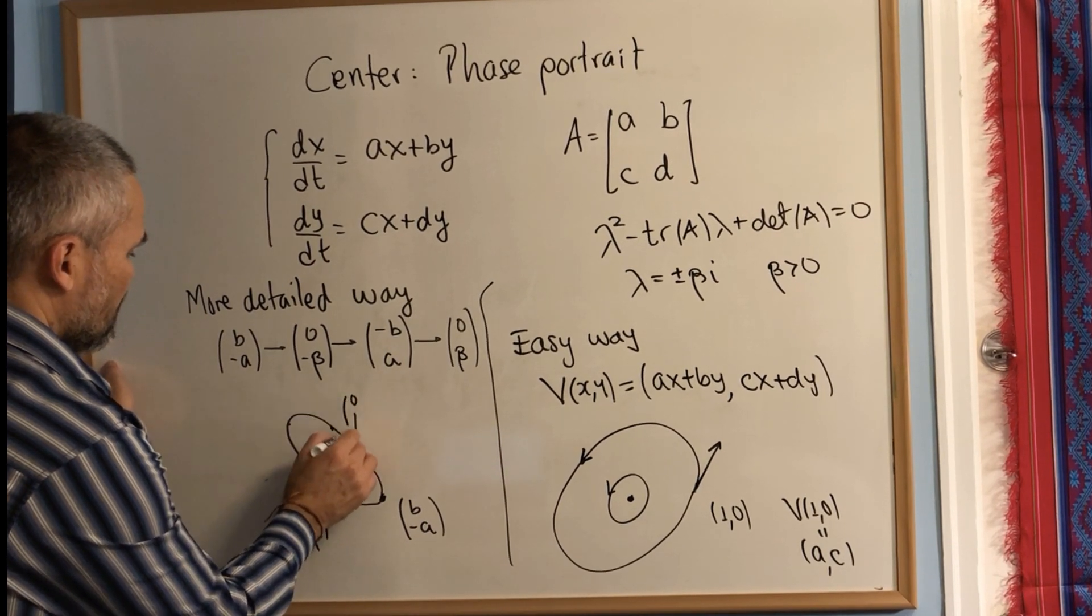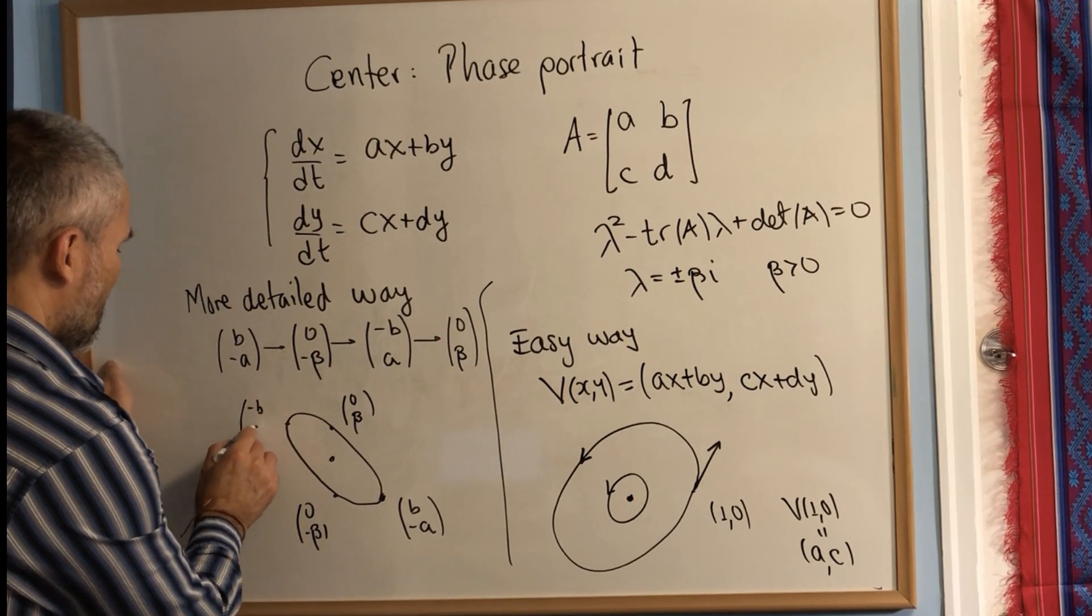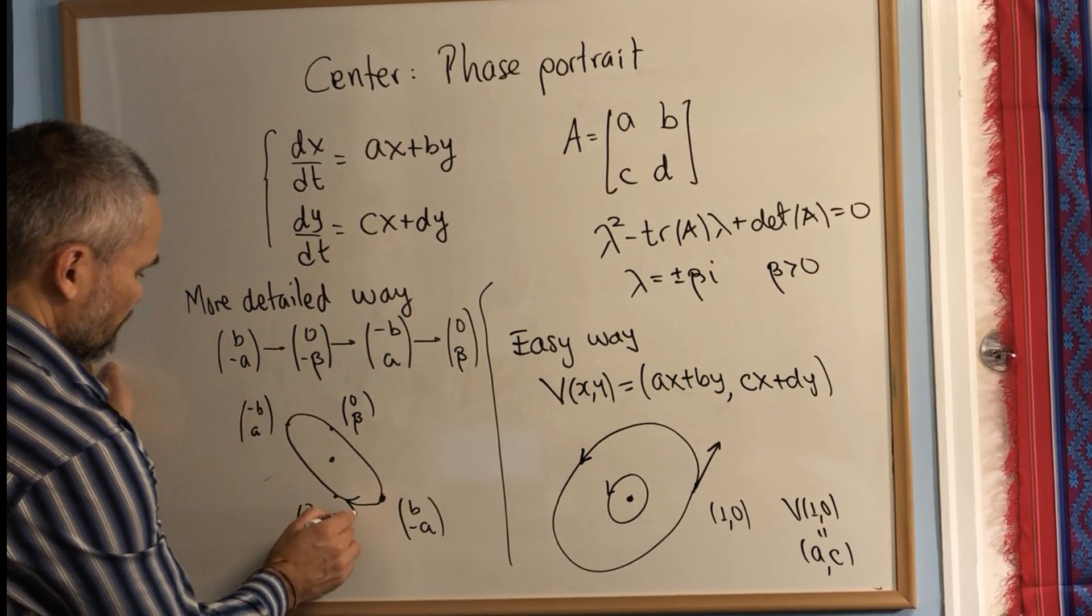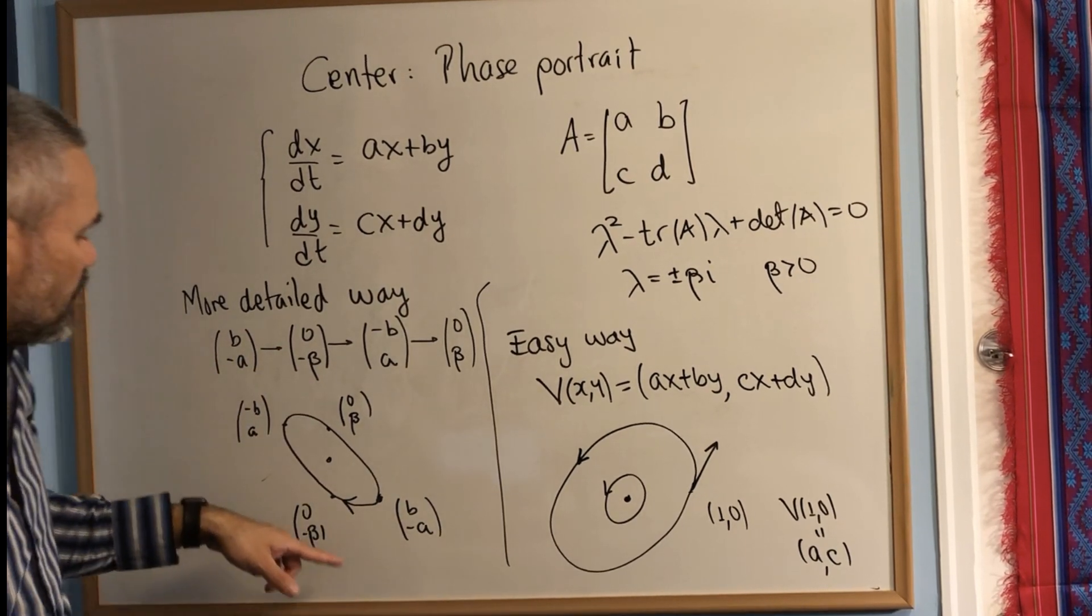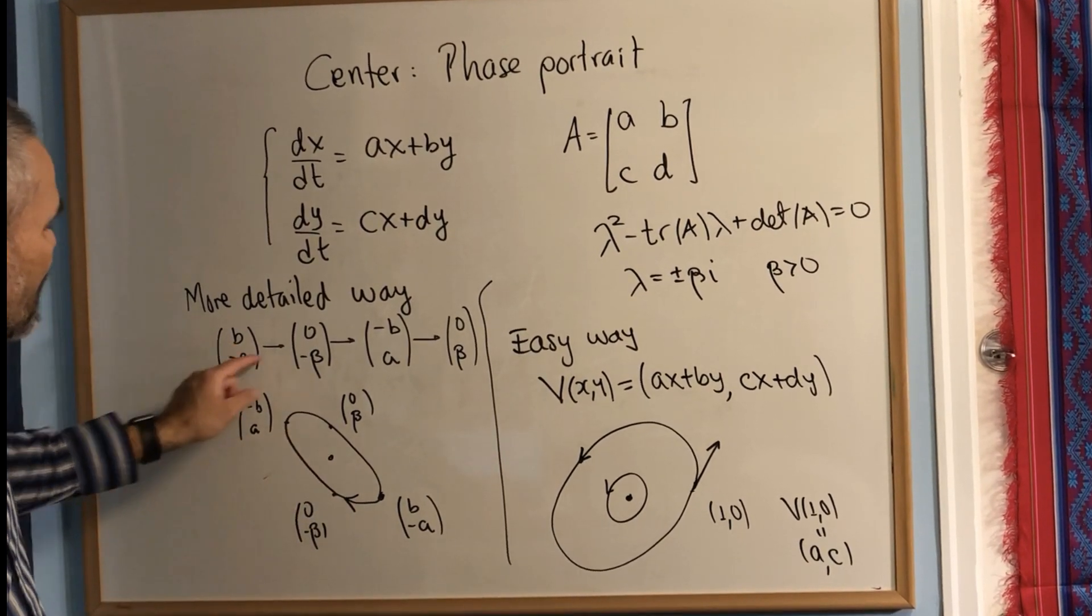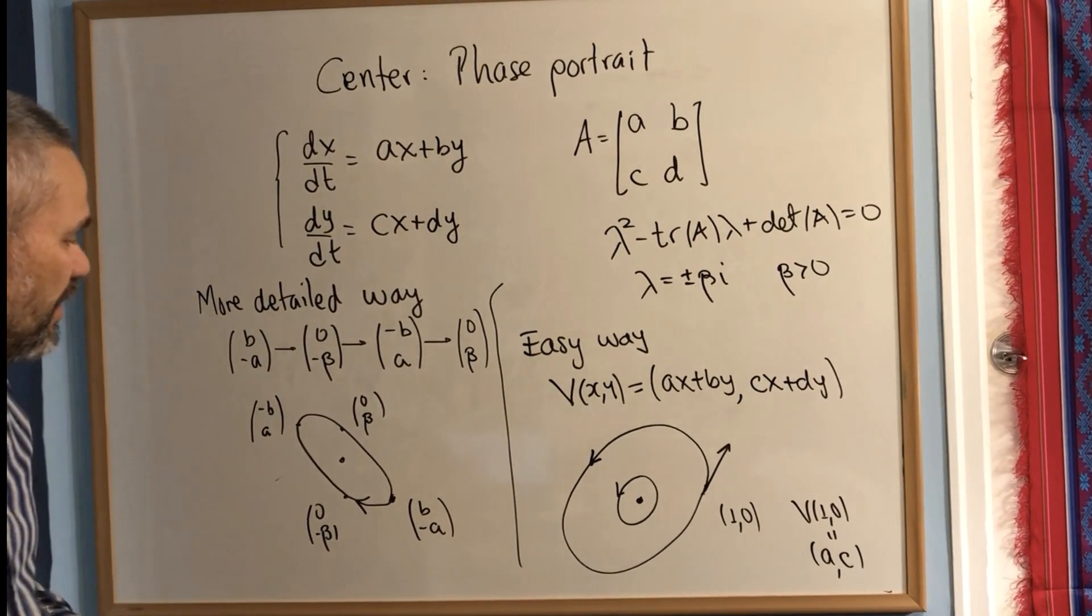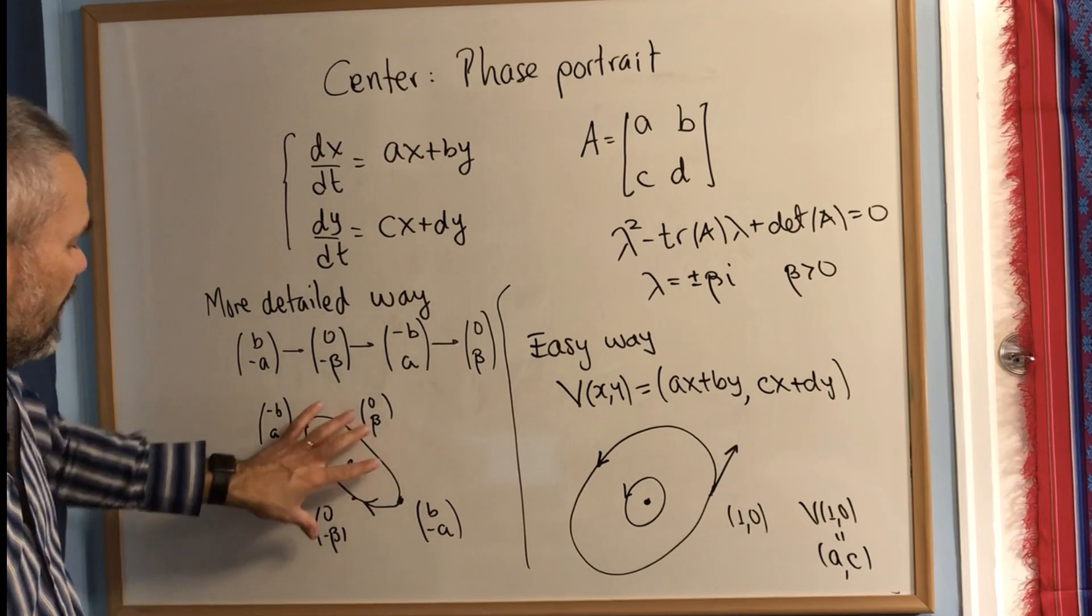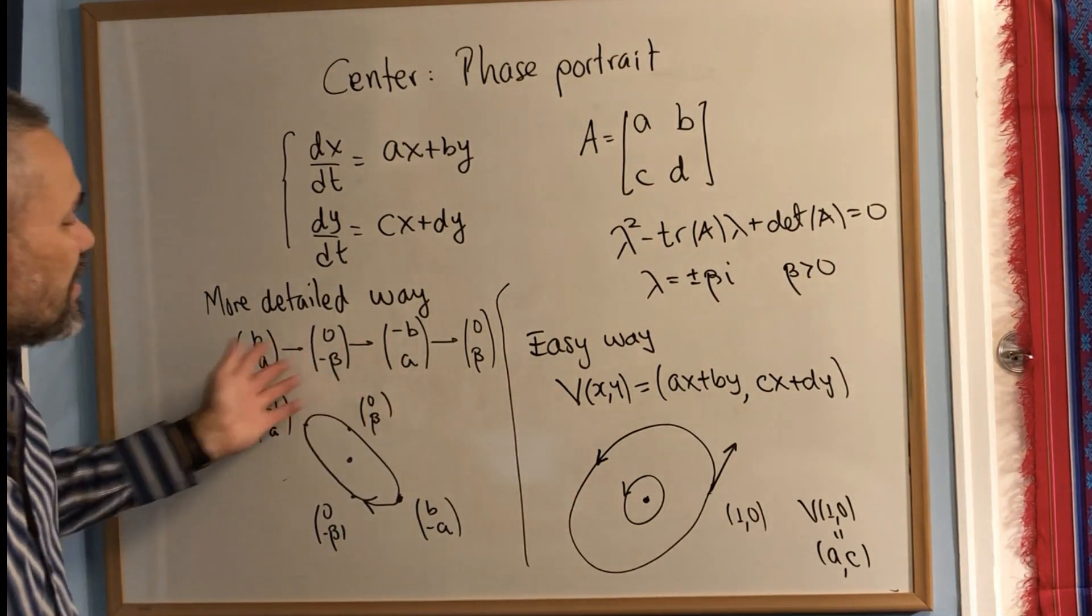This is the vector (0,β), and this is the vector (-b,a). This is the ellipse. Then according to the direction of these four vectors, we get the direction of the orbits. Note that in this case, they are not exactly the same, but these are two methods to compute the orbits.